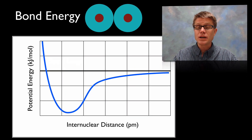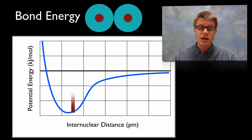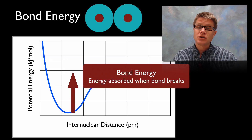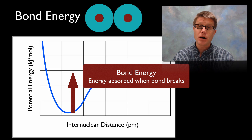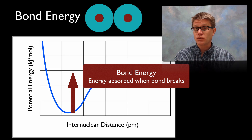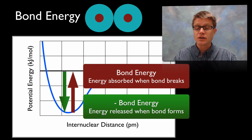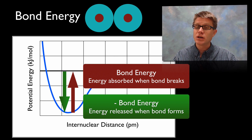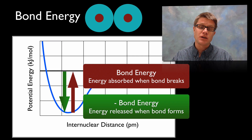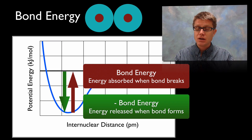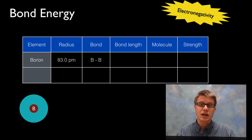Bond energy is defined as the energy absorbed when we break those atoms apart. Likewise, there's going to be energy released as we bond those together — that's the negative bond energy. The amount of energy to break it apart is exactly the same amount of energy that we get when those two atoms are attracted together.